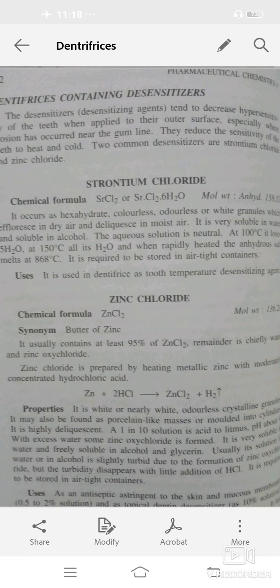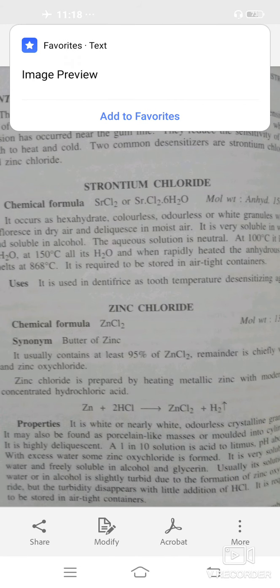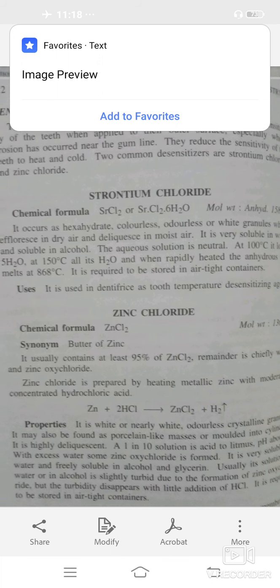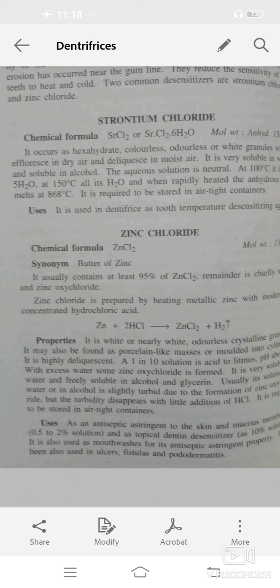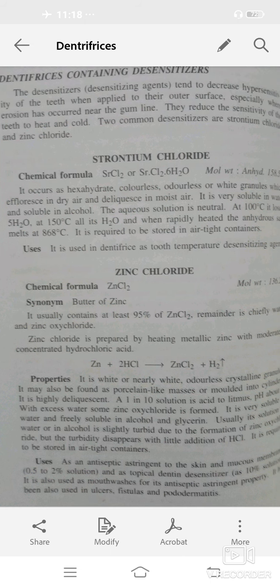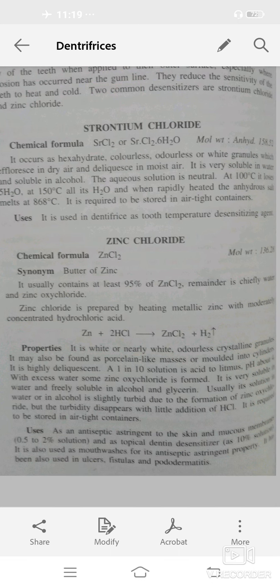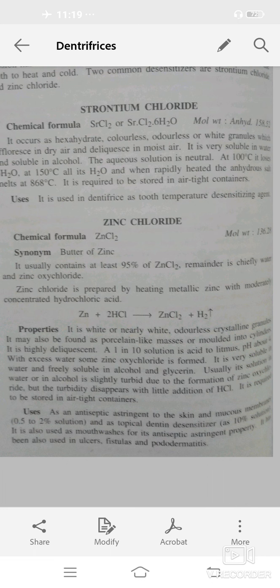Next is zinc chloride ZnCl2. For preparation, zinc reacts with HCl and then forms zinc chloride and hydrogen separates. Properties: it's a white crystalline granule, must be fused into a porcelain-like mass or molded into splinters. Should be stored in airtight containers and protected from light. Freely soluble in water and in alcohol. Use: as an antiseptic, which prevents infection or prevents the growth of bacteria or other microbes. As a topical desensitizer, which decreases hypersensitivity. Used as a mouthwash for antiseptic properties, also used in ulcers, sores, or in photodermatitis. Thank you.